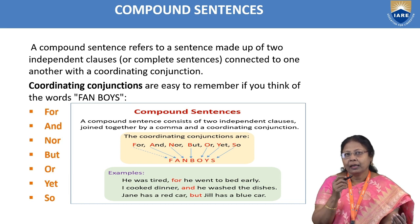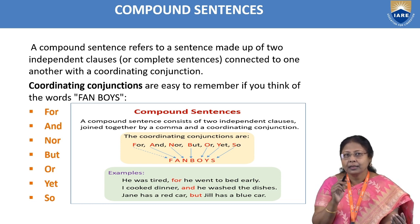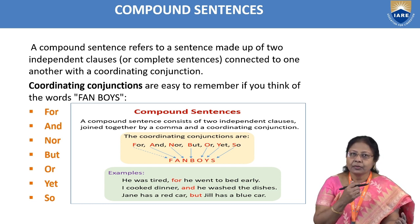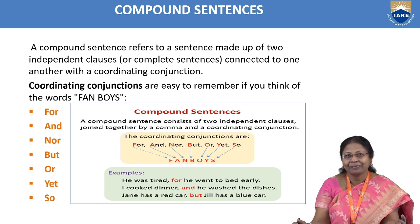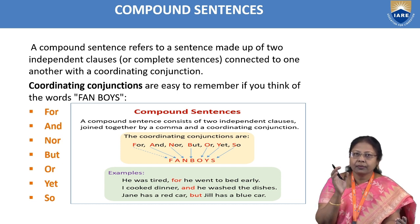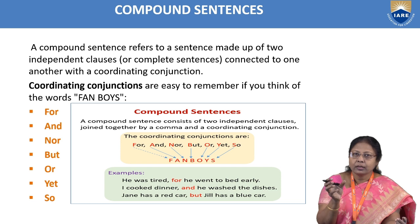FANBOYS — is it not funny? F stands for 'for', A stands for 'and', N stands for 'nor', B stands for 'but', O stands for 'or', Y stands for 'yet', S stands for 'so'. So: fan — for, and, nor; boys — but, or, yet, so. These are the coordinating conjunctions we use to combine two independent clauses.